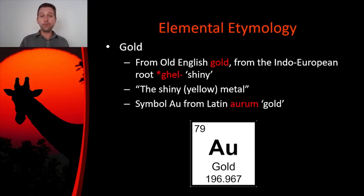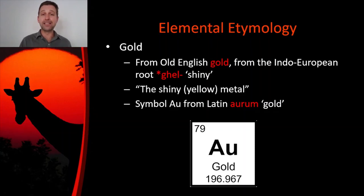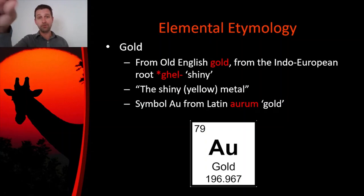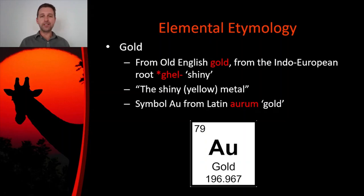Where does the symbol Au come from? It comes from the Latin word for gold, which was 'aurum.' This word evolved into the Romance languages in recognizable ways. In French today it's 'or,' in Spanish it's 'oro' — if you know Spanish, you know that oro means gold. Oro just comes from the Latin aurum; the word didn't change that much over the past thousand years.